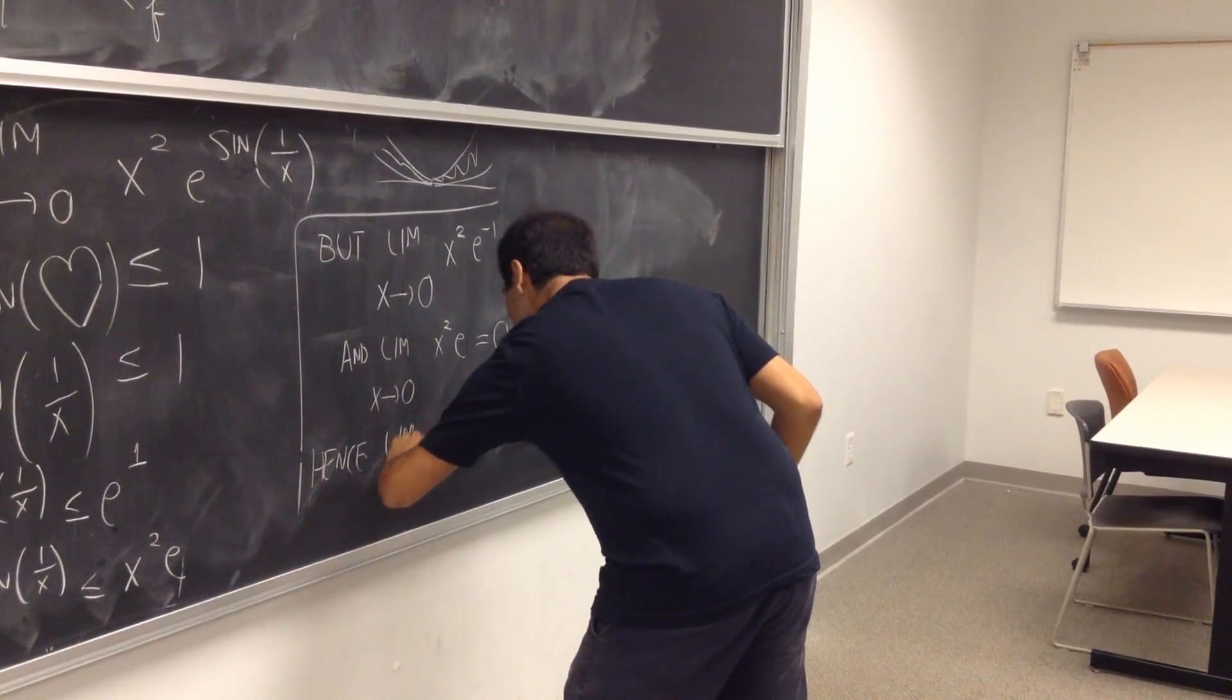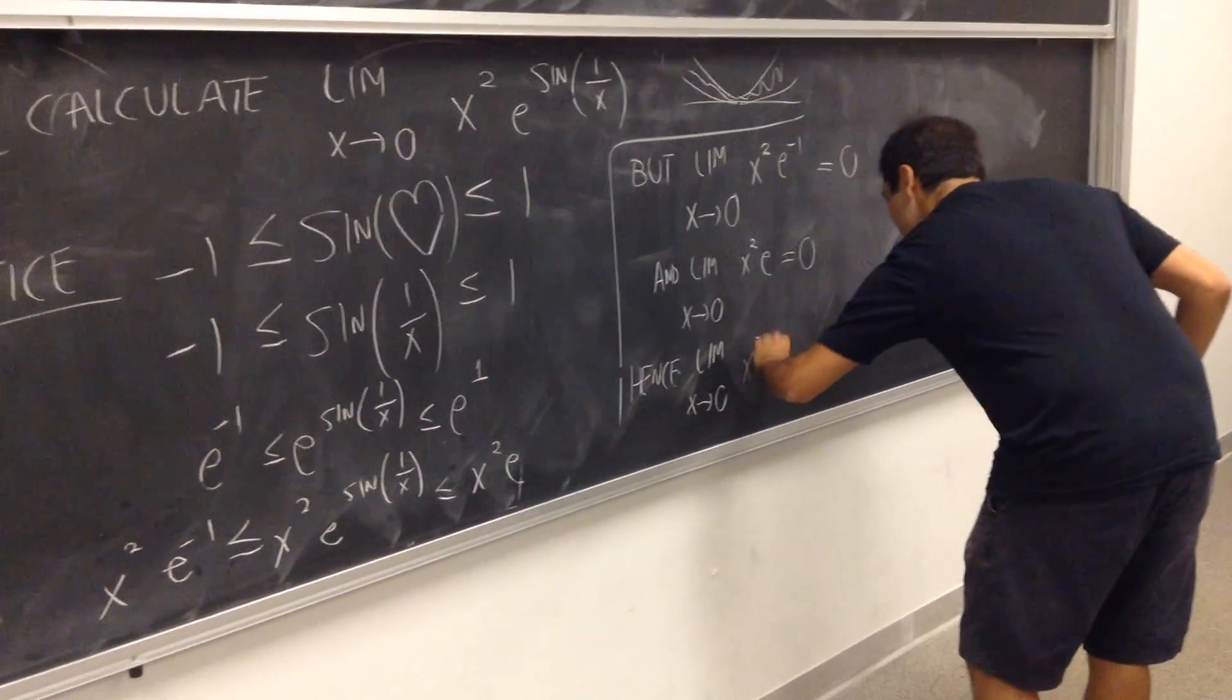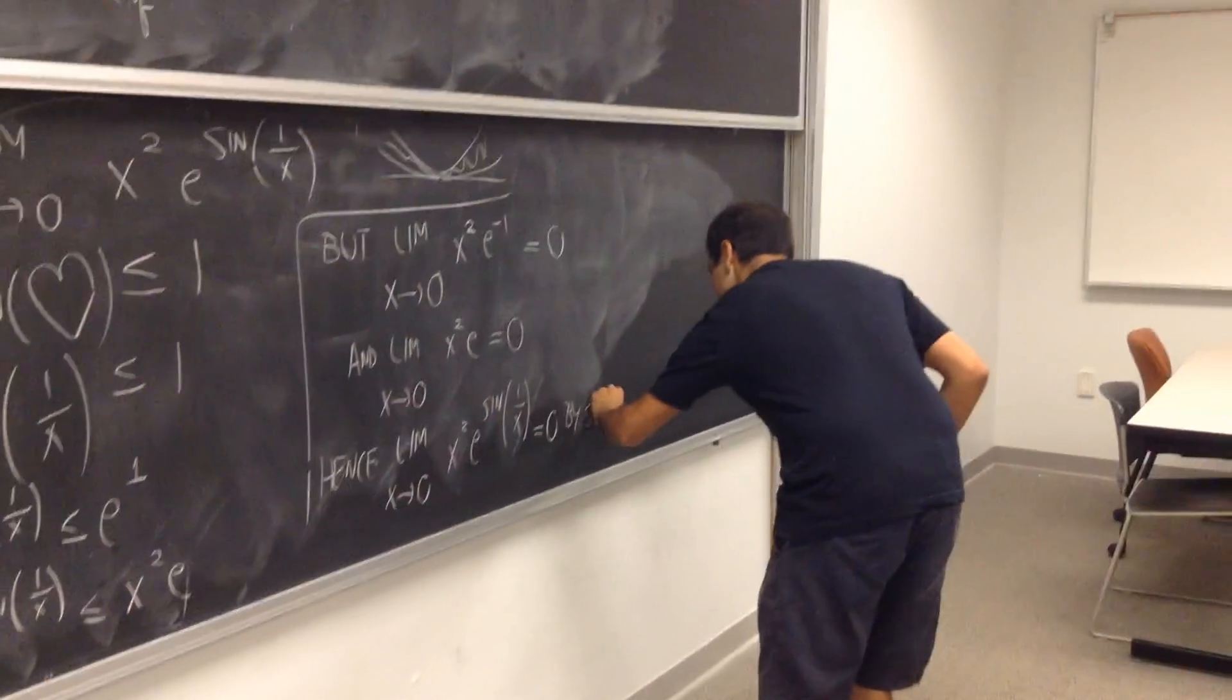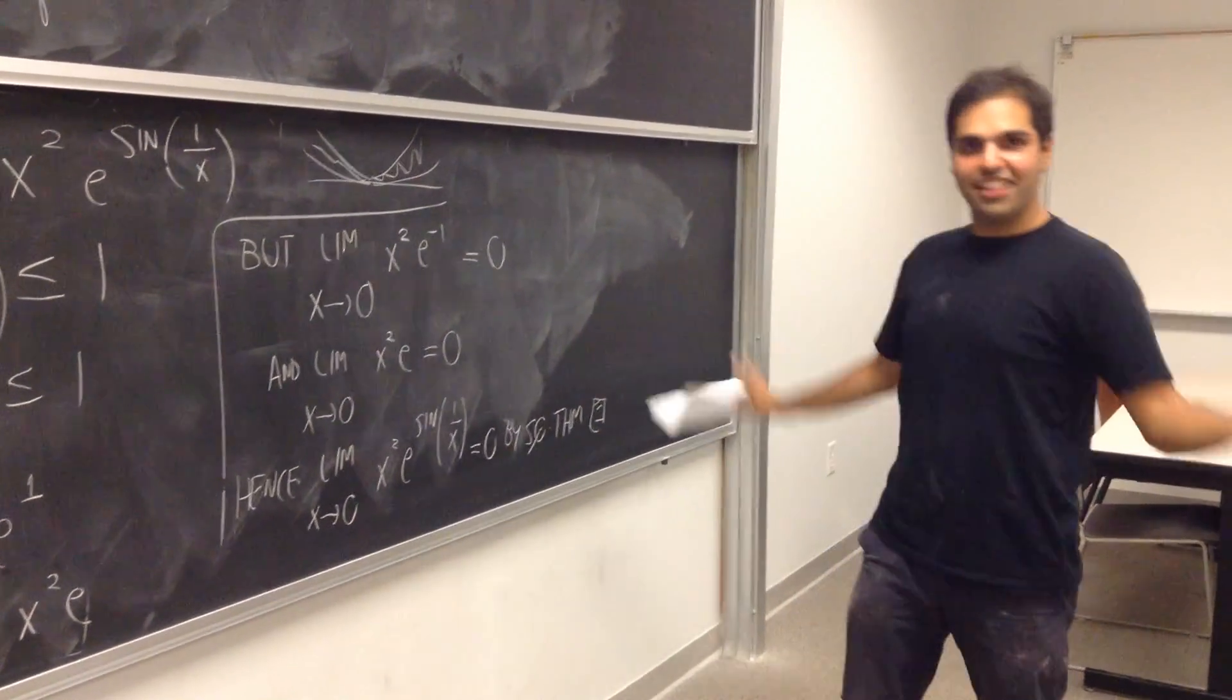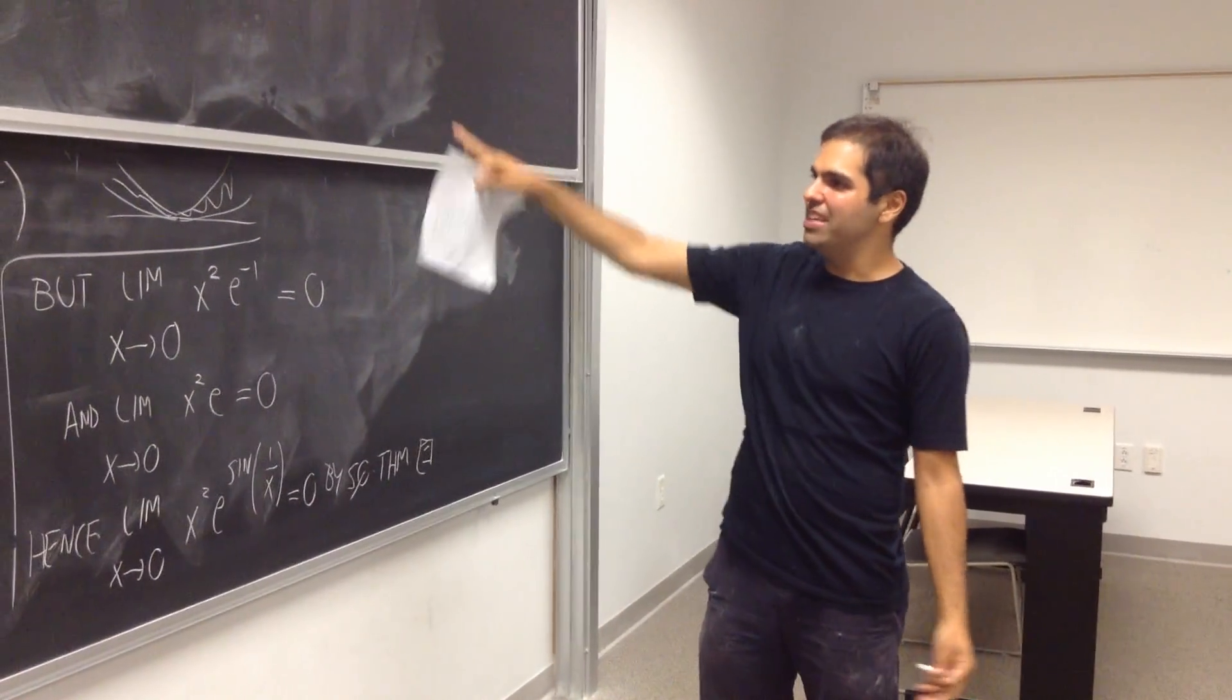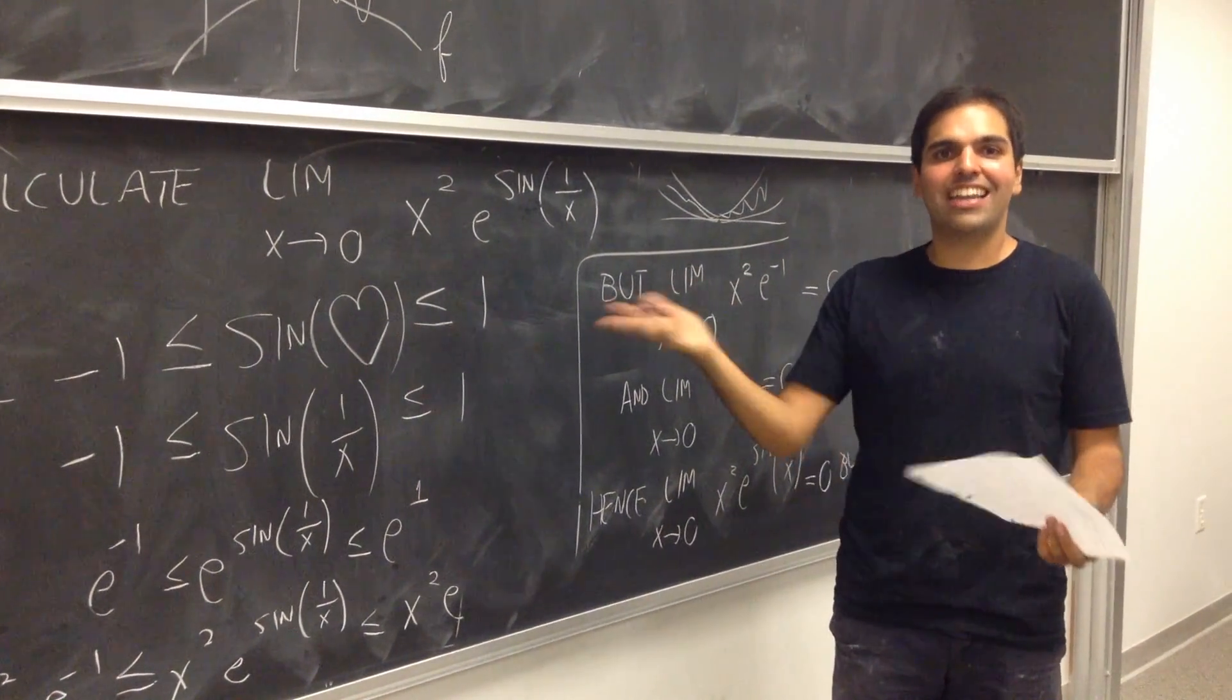Hence, limit x goes to zero of x squared e of sine of one over x equals to zero by squeeze theorem. And then we're done and we can go home happy. But, in other words, you know, always use the squeeze theorem, especially when you see a sine of one over x, or anything that oscillates widely and it's hard to control. Alright, thank you very much. Thank you.